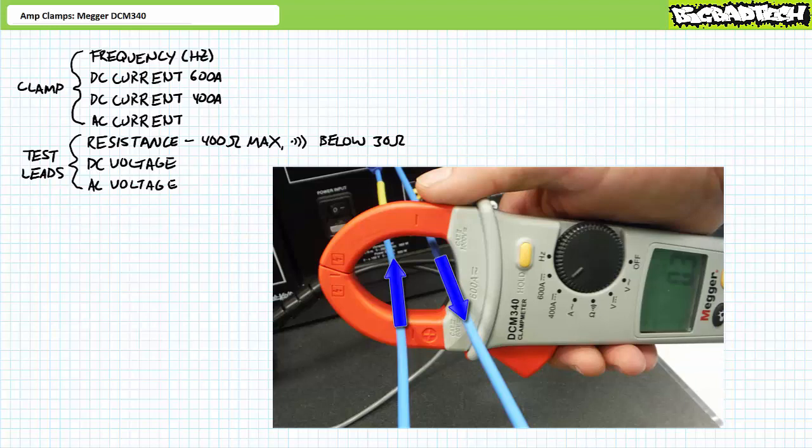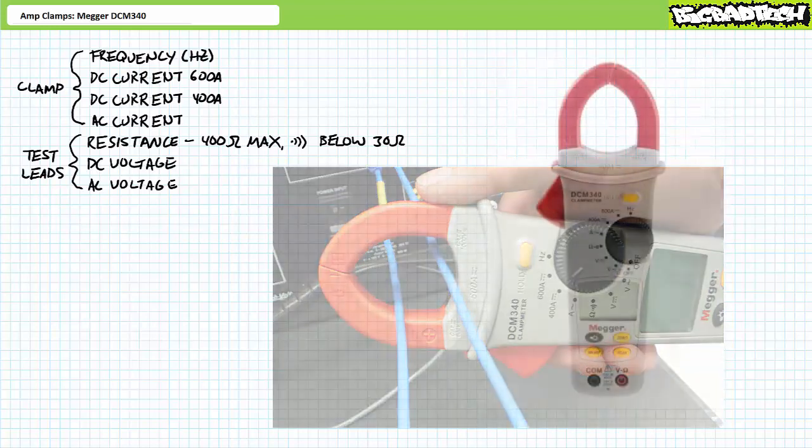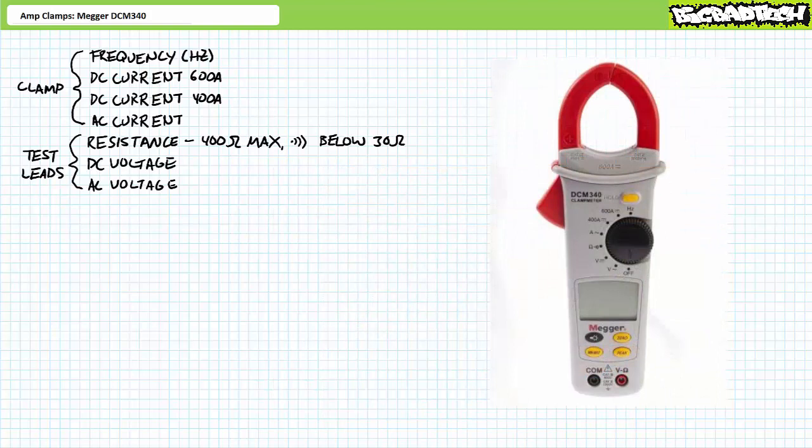Again, amp clamps can only measure current through one conductor at a time. Since amp clamps are so easy to use, this discussion is brief enough to allow us to explore some additional features in the Mega DCM340.